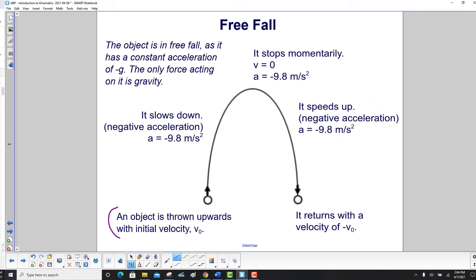The object is thrown up at this point with v0. As it's going up, it experiences a negative acceleration due to gravity. The acceleration is pointed down, so since its velocity is up, that means it's slowing down.